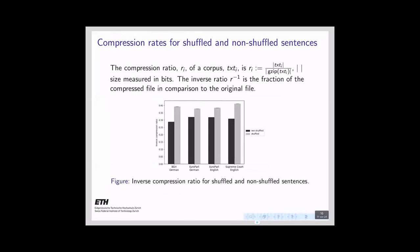We looked at shuffled and non-shuffled sentences and their compression rates across all corpora. The best compression rates were obtained for the German BGH, followed by the English Supreme Court. The Europarl German and English are fairly identical, a nice proof of good translation quality. As we shuffle the text, entropy increases — we destroy structure and compression becomes less effective compared to the original text. This macroscopic observable is a hint towards our hypothesis.